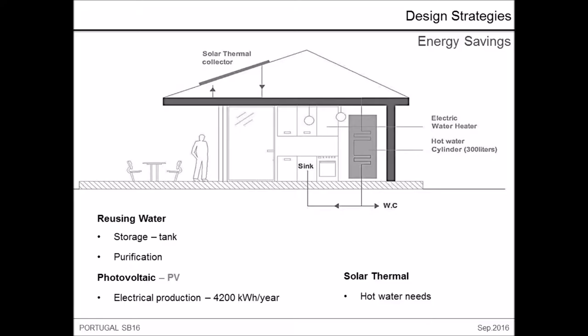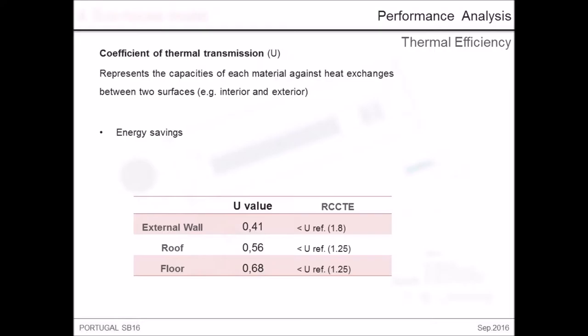The eco-house will also be provided with a photovoltaic system and solar thermal panels for hot water needs. It is also crucial to have a saving system for the house in order to store rainwater, allowing it to be reused. On this image, we can see the location of the different equipment.